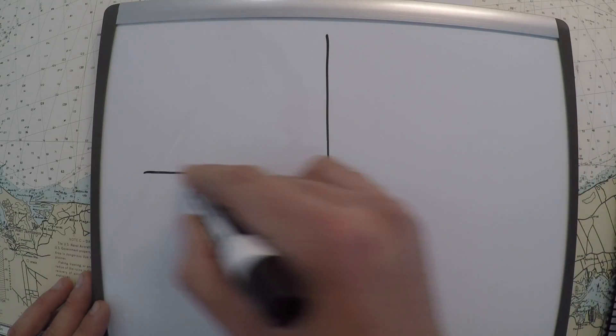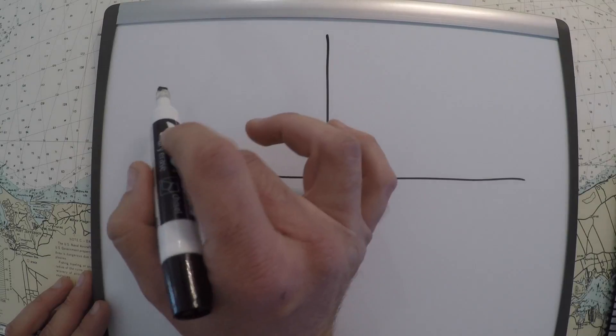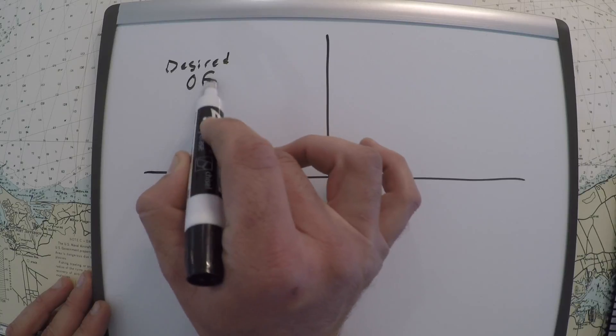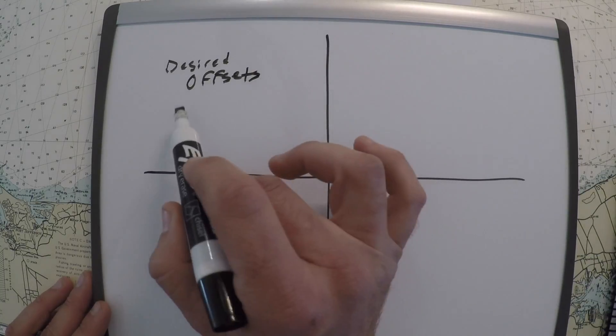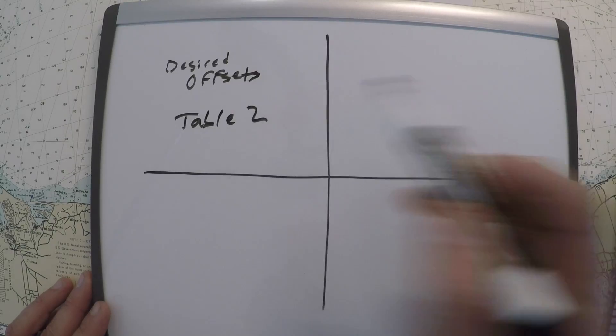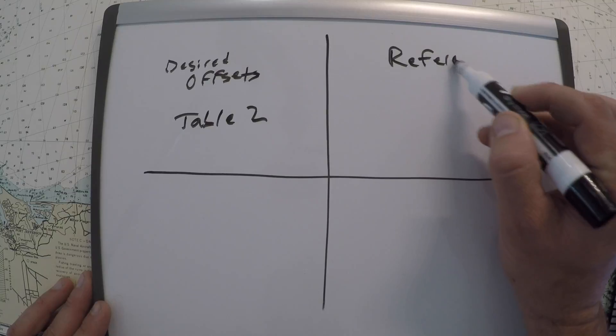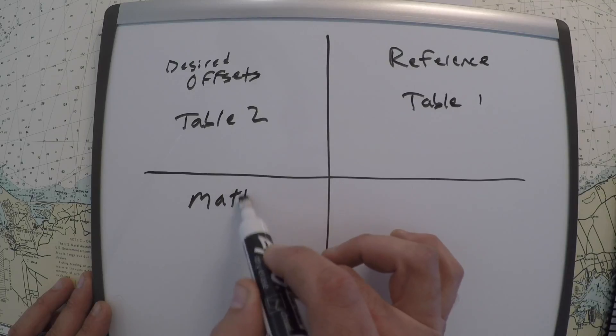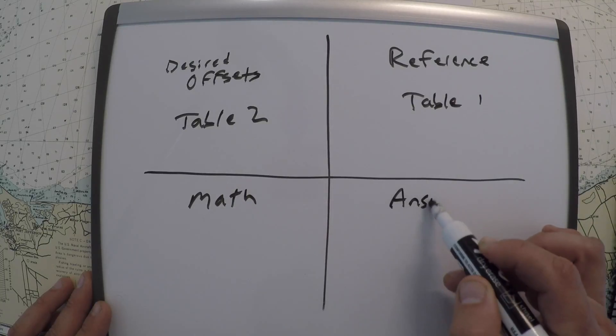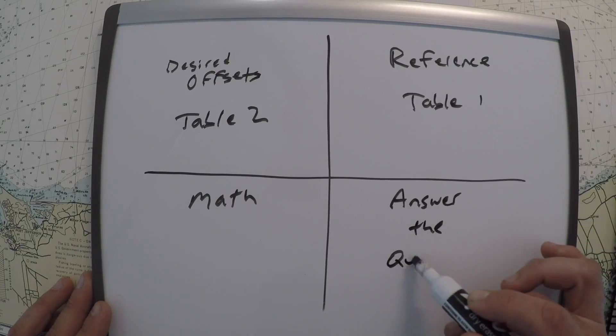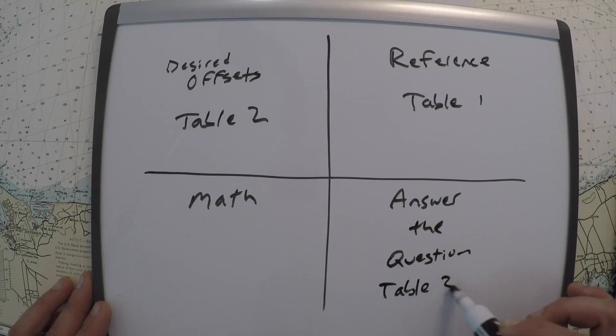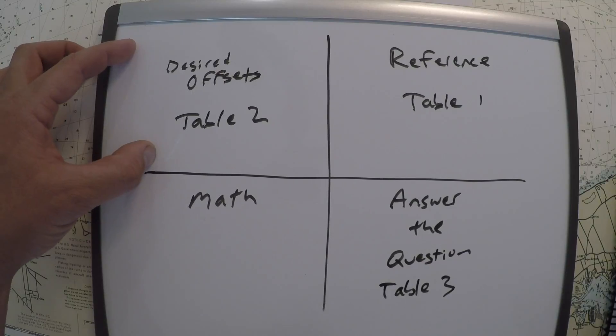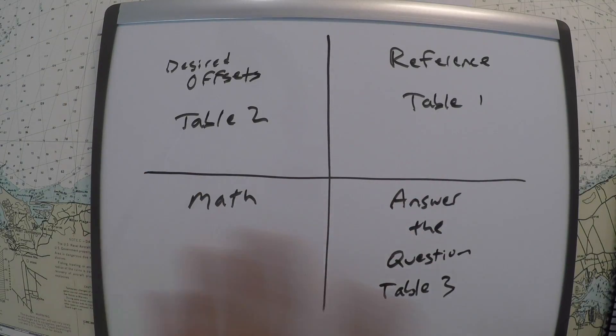This is how I recommend we kind of go after this. If we go with a grid pattern and up here we look for our desired offsets. That's going to be table two. This is going to be our reference station, which is table one. And then this is going to be math, where we apply some offsets. And this will be down here, answer the question. Usually it involves table three. So this is kind of how we lay out our problems. We're going to look at the offsets necessary for our tidal station. We'll find our reference, we'll do some math and then we'll answer the question there.